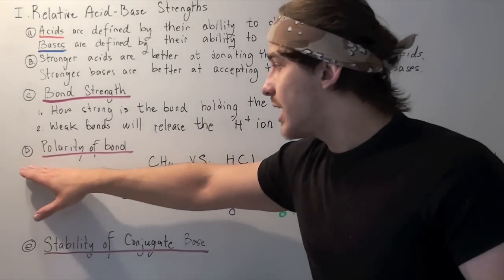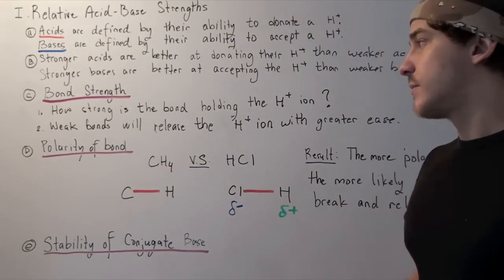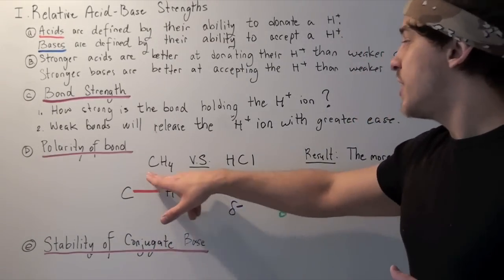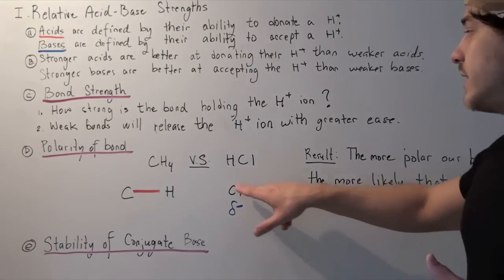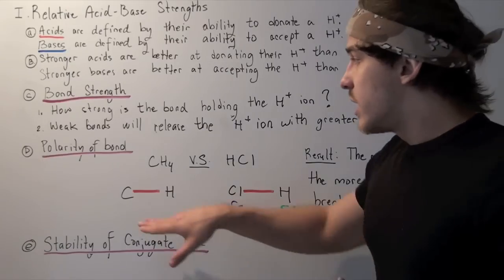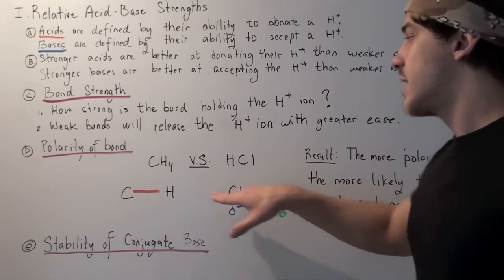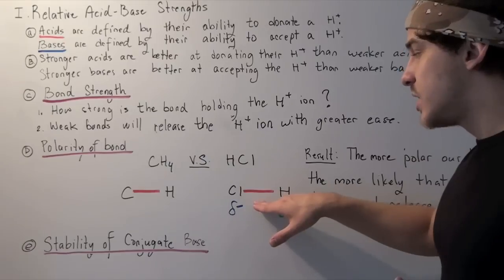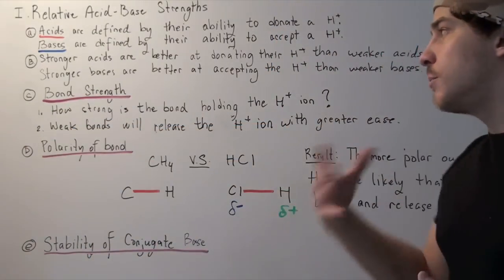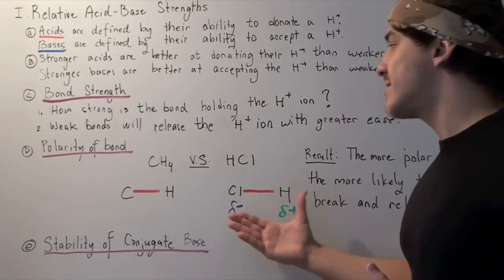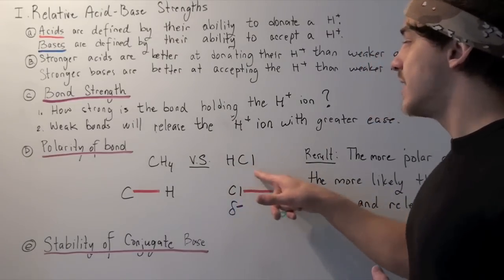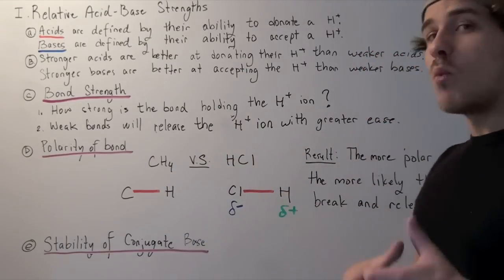Let's look at the polarity of our bond. How polar is our bond? Let's examine a CH bond in methane and an HCl bond in hydrochloric acid. The strength of these bonds is relatively the same. So if we strictly look at bond strength, we will determine that our acid strength is the same. But that's not the case. This is a much better acid than our methane molecule. So why is that?